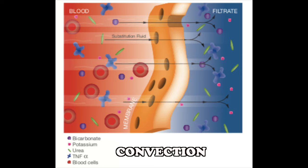Convection is the one-way movement of solutes through a semi-permeable membrane with a water flow, sometimes referred to as solvent drag. It is efficient for both larger and smaller molecules; the faster the substitution flow rate, the higher the clearance. Pressure difference between the blood and ultrafiltrate causes plasma water to be filtered across, causing solvent drag for small and large molecules across the membrane. The ultrafiltrate containing the solute should be replaced by substitution solutions, which must have near-physiological levels of electrolytes and buffer and be sterile. Convection is a hemofiltration principle.